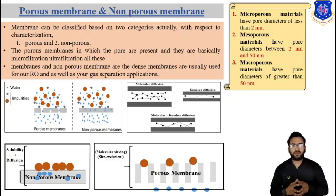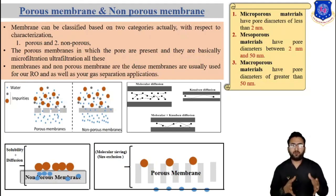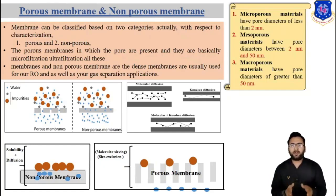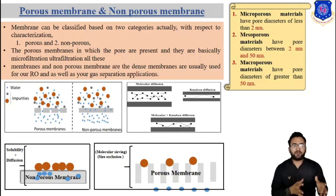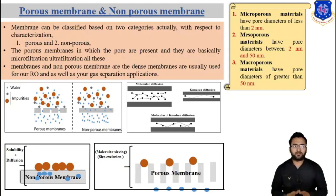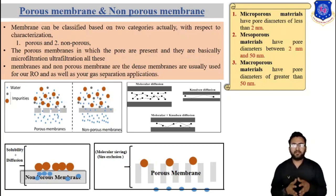In microfiltration and ultrafiltration membranes, fixed pores are present which can be characterized by various techniques. The pores are already present so we need to characterize them using different techniques. In order to avoid confusion in defining porous membranes, the term 'porous' has been used throughout this course for both microfiltration and ultrafiltration.